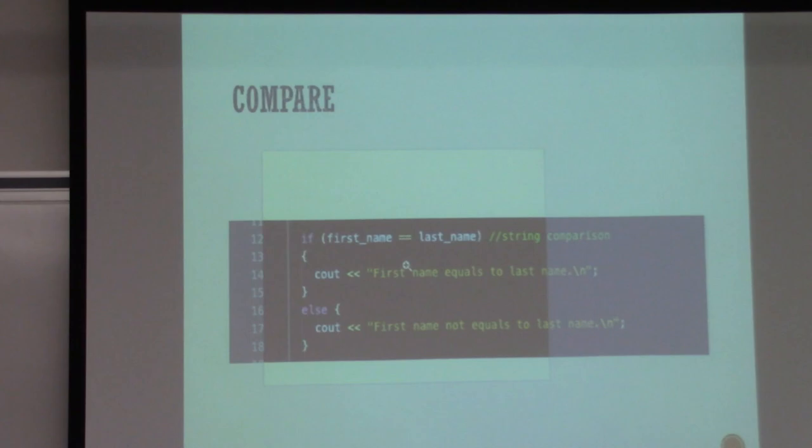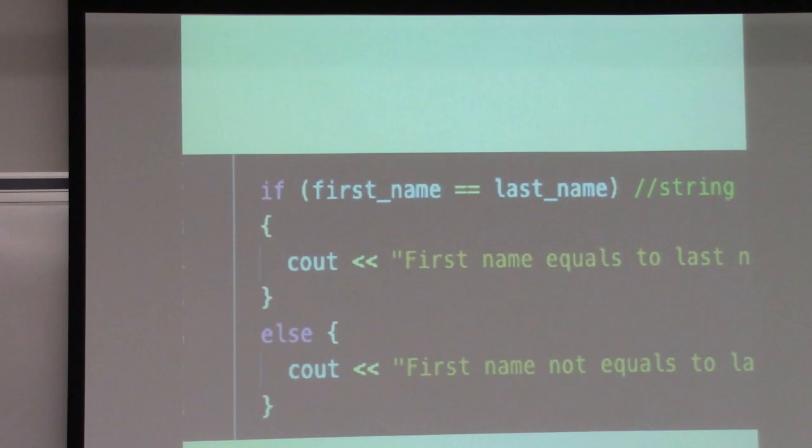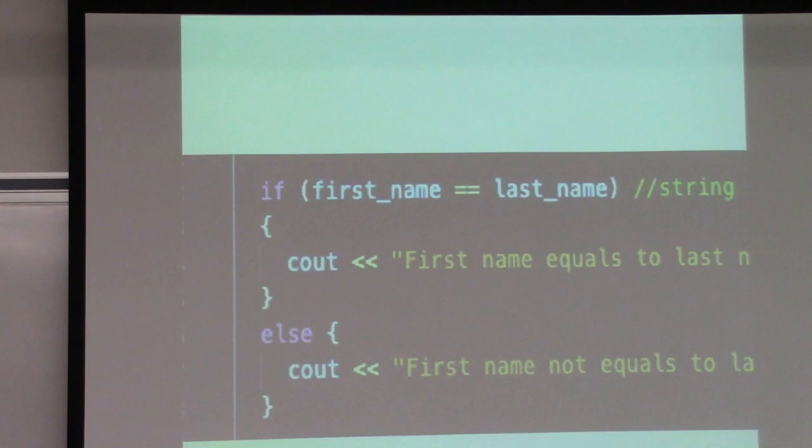For compare, you compare just like integers or floats using the double equals sign. If you do 'firstName == lastName', it will return true if they're exactly equal, and false otherwise. Some of you remember having to call a compare function or loop through a string — you don't need to do that anymore. For string objects, == will tell you whether two string objects are equal.